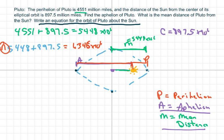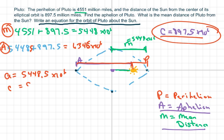All right. This is our M. And our focus is here. So now we have A equals 5,448.5 million. This should have been 0.5, 5,448.5 million. Our C is right here, 897.5 million. And we have to find B because our equation is going to be in this form.